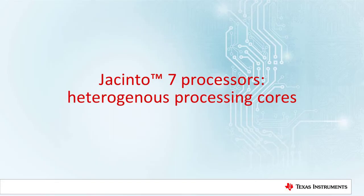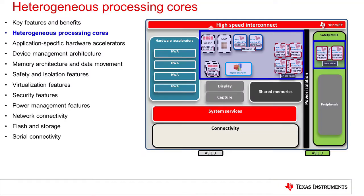The Jacinto 7 processors provide a mix of heterogeneous processing cores. The fundamental benefit of the heterogeneous processing approach is to use the appropriate core for the appropriate task or workload. This results in overall higher system performance for a given power and thermal budget, and also allows flexibility to use appropriate and/or available software depending on the task.